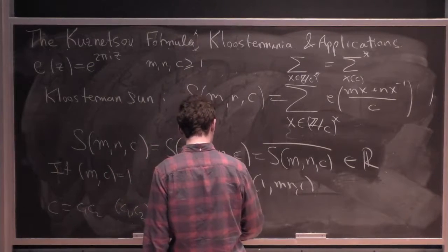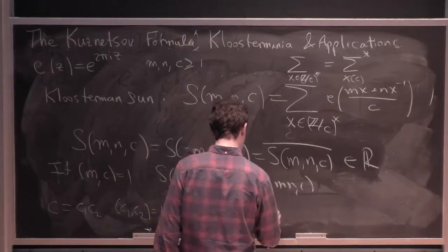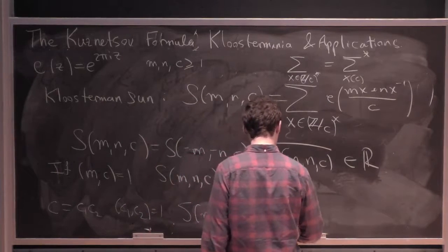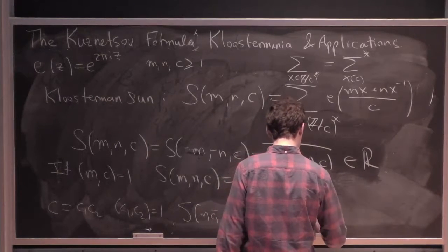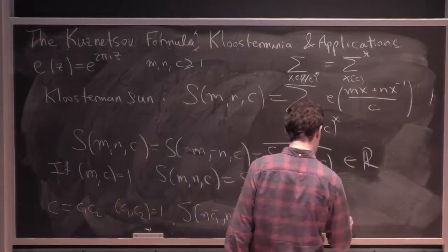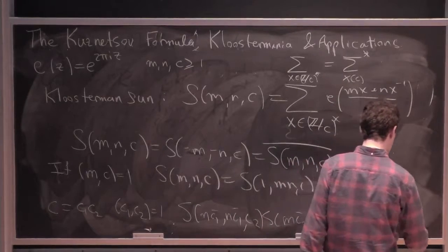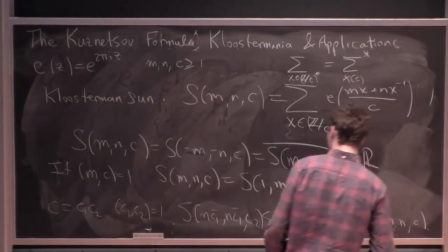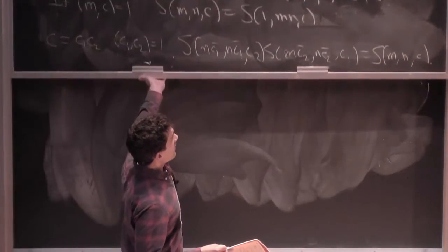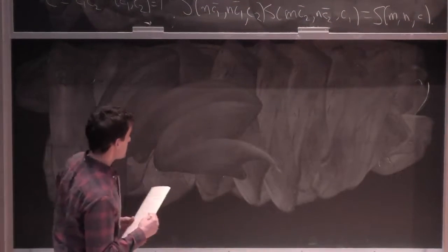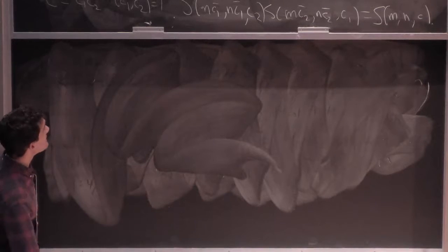They also factor: the Kloosterman sum is a multiplicative function in C with a twisted multiplicativity. If C equals C1 times C2 with C1 and C2 relatively prime, it satisfies a property like S(M·C1-bar, N·C1-bar, C2) times S(M·C2-bar, N·C2-bar, C1). All these things you can just check directly — good to have at the tip of your tongue.